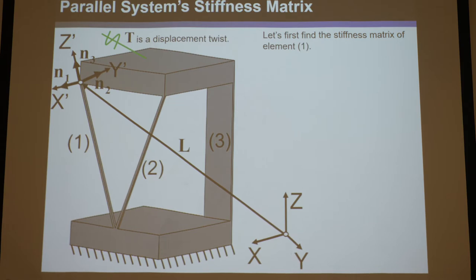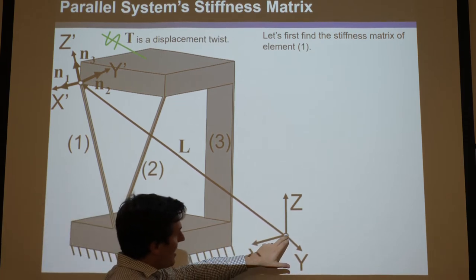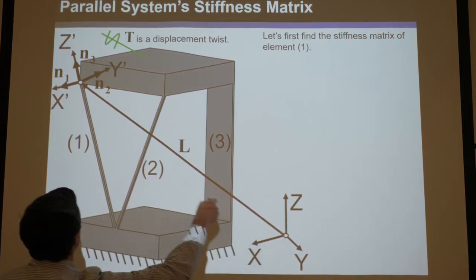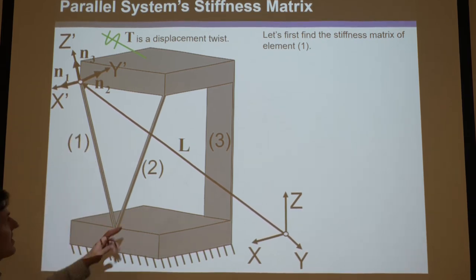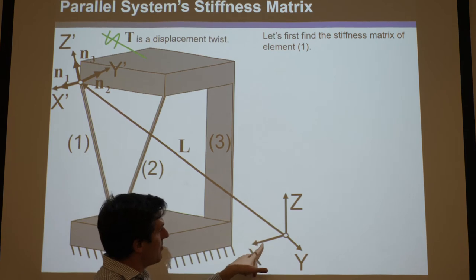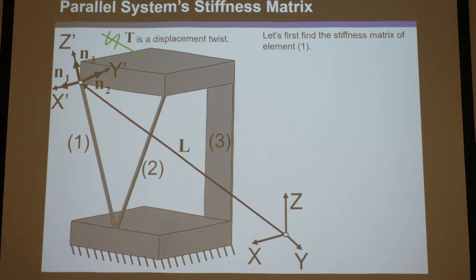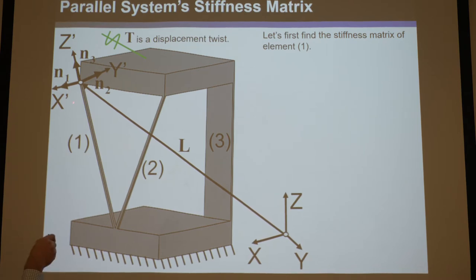With respect to the global coordinate system, define a three-by-one vector L that points from the global origin to the point where the element attaches to the stage. Then define unit vectors n1, n2, and n3 — all orthogonal — collinear with x-prime, y-prime, and z-prime respectively, with each defined with respect to the global coordinate system. So n1 has components n1x, n1y, n1z in global coordinates, and its magnitude must be one.